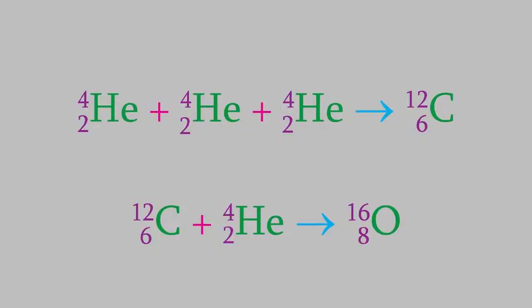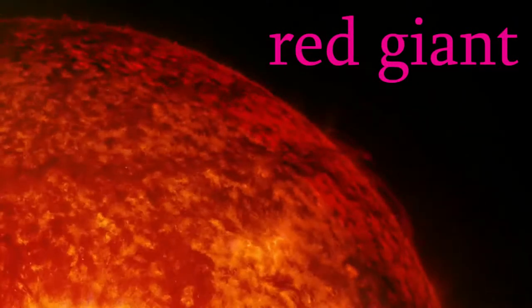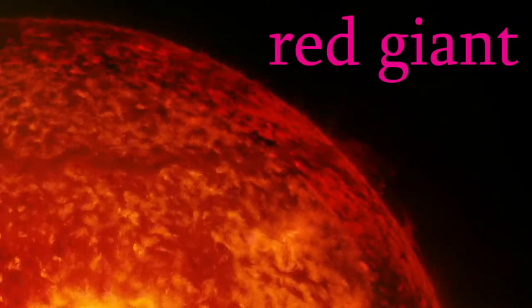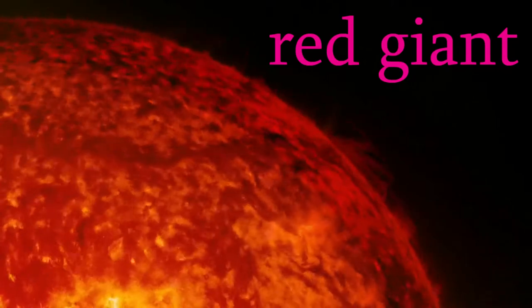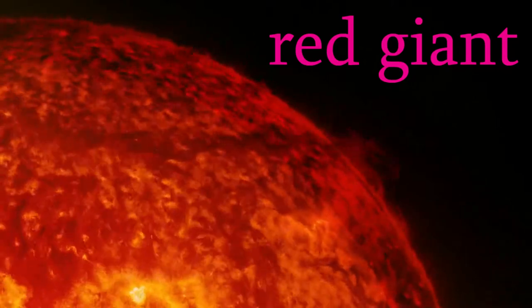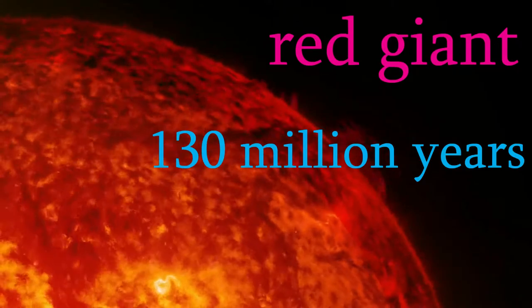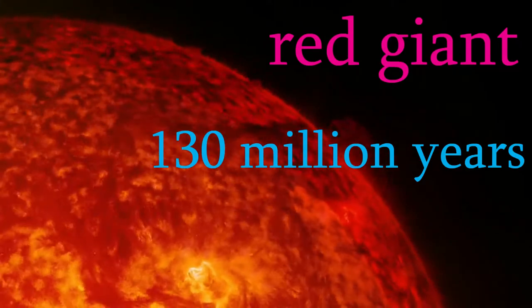The fusion reaction needed to form an element is increasingly difficult as the elements get heavier, and so they require a higher and higher temperature. The intense heat makes the star expand, and so our Sun will become larger, becoming a type of star called a red giant. The fusion of helium and other elements takes place much faster than the fusion of hydrogen did, so this part of the star's life only lasts about 130 million years, much less than the billions of years that the hydrogen fusion lasted.